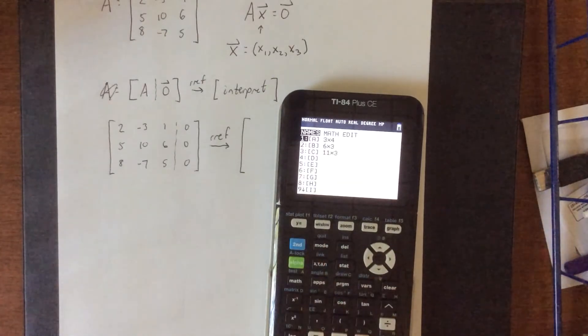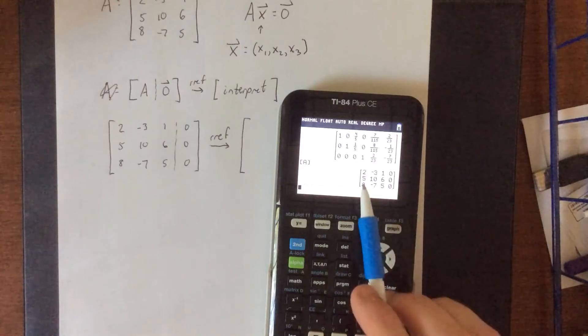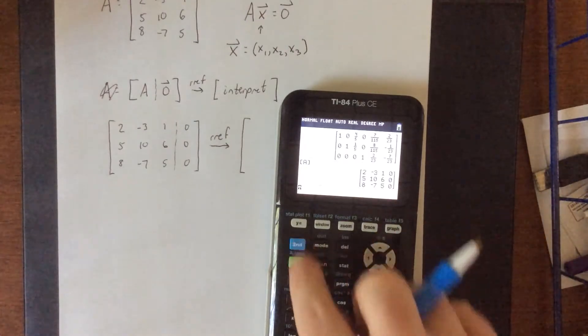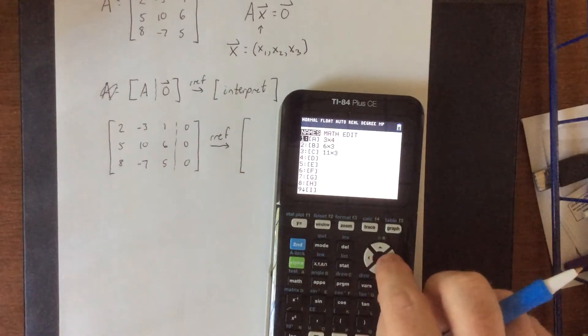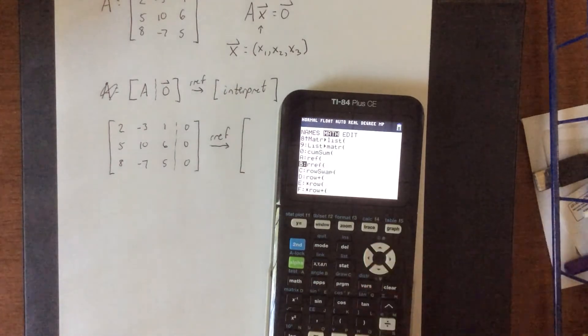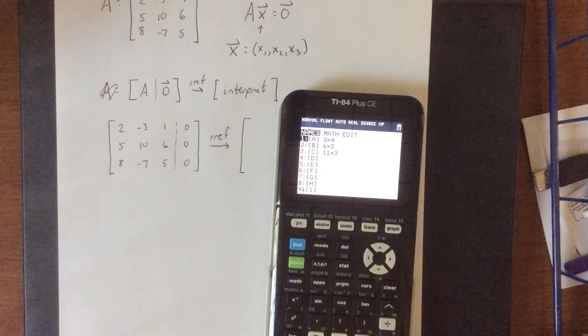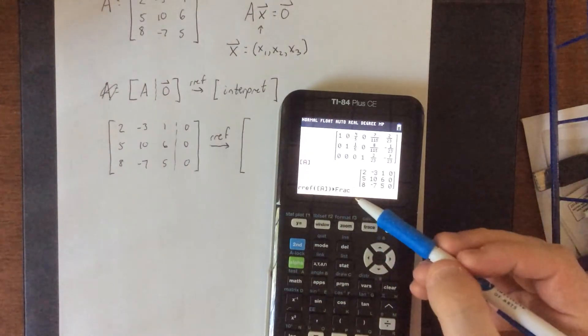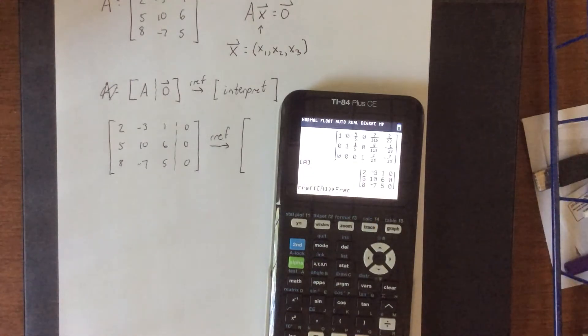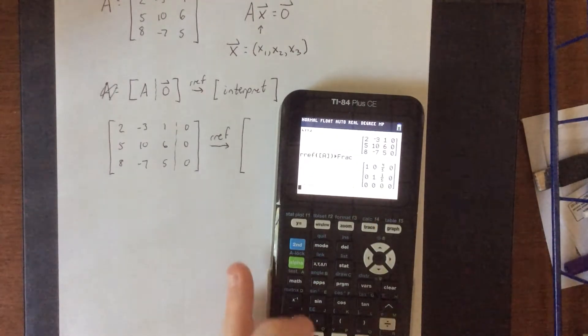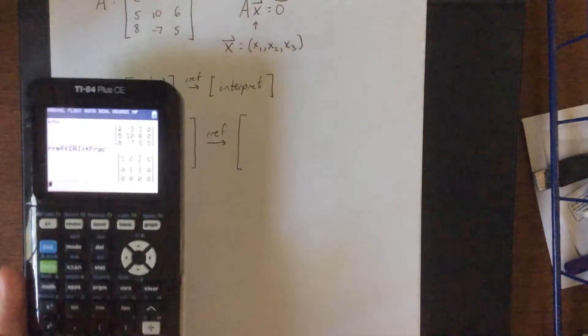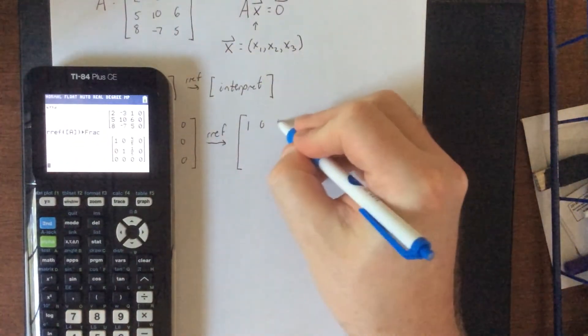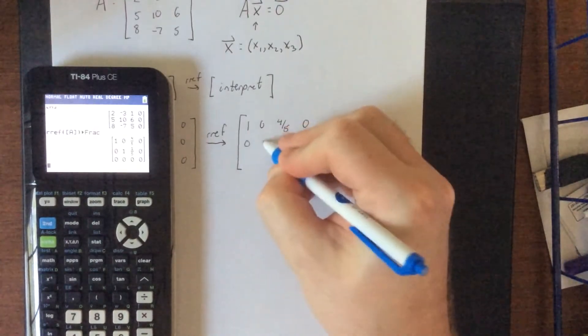Then we'll double check and make sure that everything got inputted correctly. First row looks good, second row looks good, third row looks good. Okay, so now I'm going to ask for reduced row echelon form and I'm actually going to remember to convert to a fraction this time. So reduced row echelon form of A and then math, enter, to say convert the answer into a fraction. We'll press enter one more time. I do see that we have a couple of fractions in here. Now all of the rows are going to be relevant for us this time, so we'll go ahead and hold on to all of them.